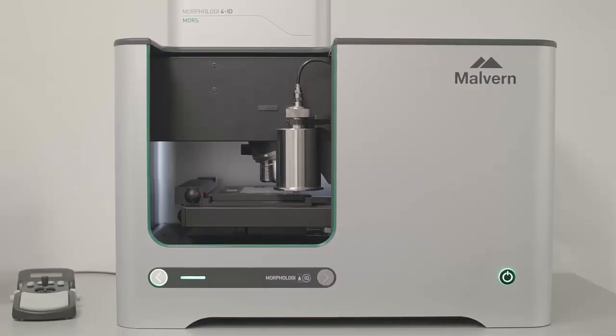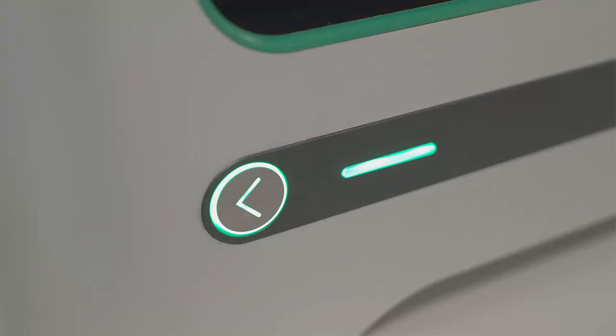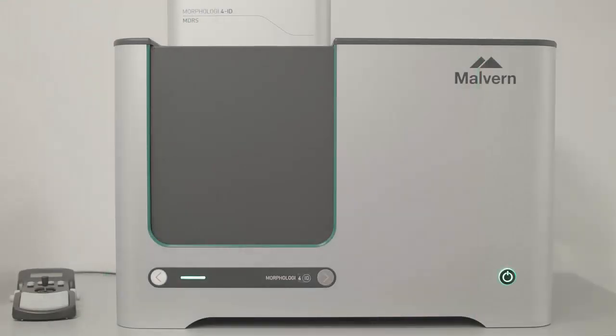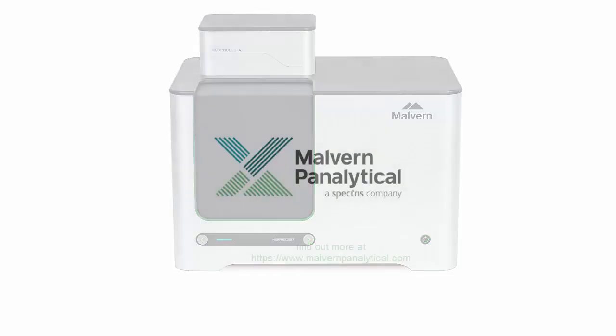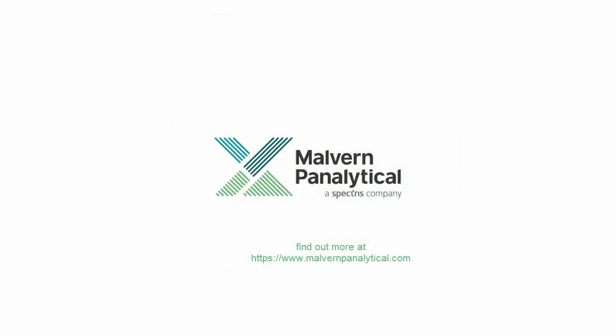Automated image analysis using the Morphology 4 provides high quality images of metal powders, resulting in particle shape parameters and statistics which can differentiate subtle but significant differences between samples. This enables the quality of metal powders to be objectively assessed, reducing defects in finished parts, ensuring consistent part manufacture, enabling more material to be recycled, and reducing waste.